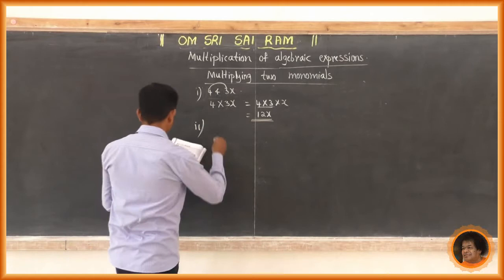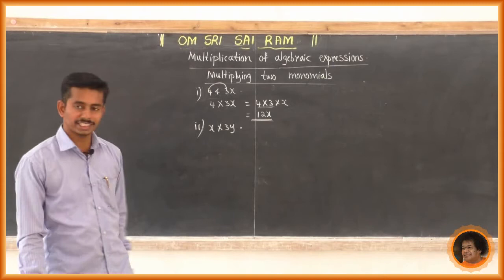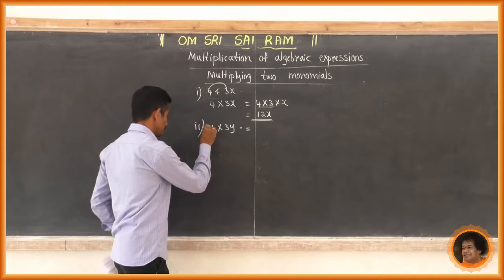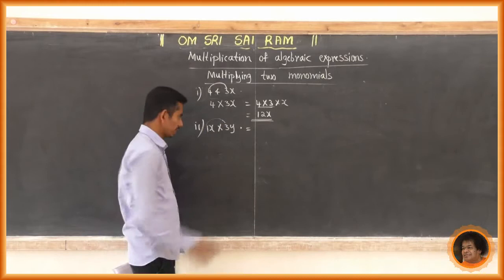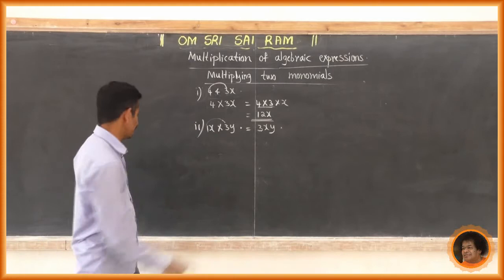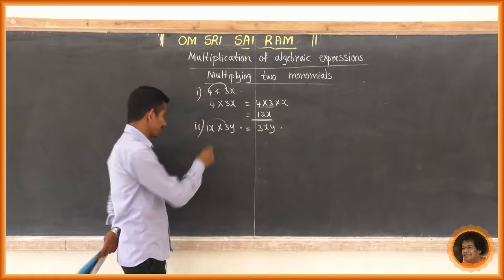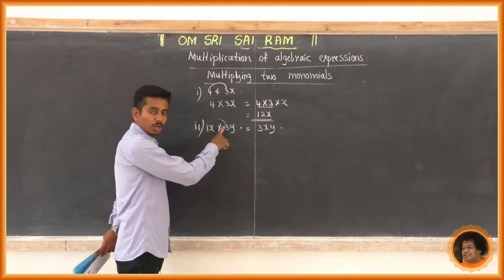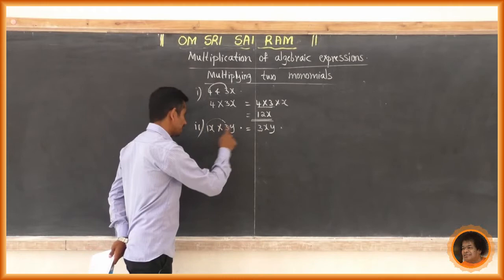Find the product of x and 3y, written as x into 3y. Here x means 1x. So first multiply the numerical coefficients: 1 into 3 is 3. Then x into y is xy. So 3xy is the product of x and 3y.